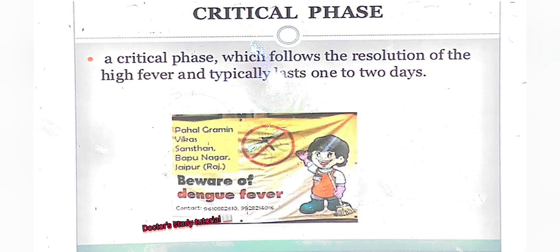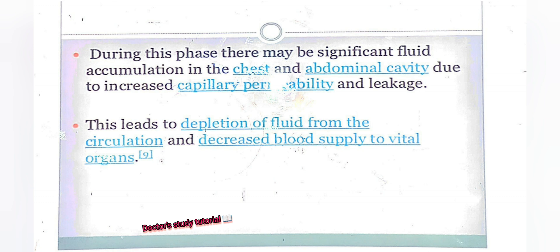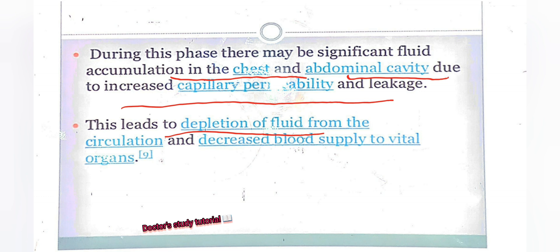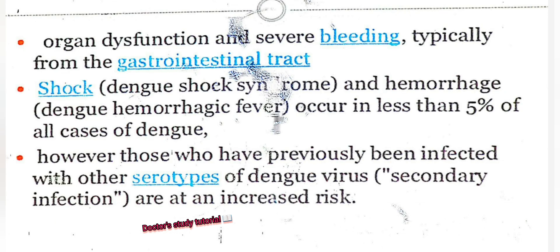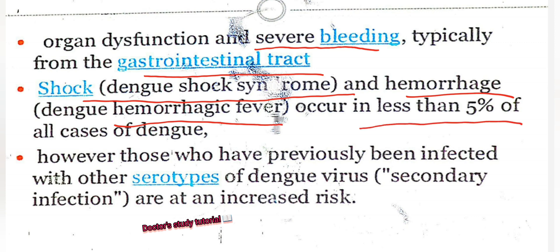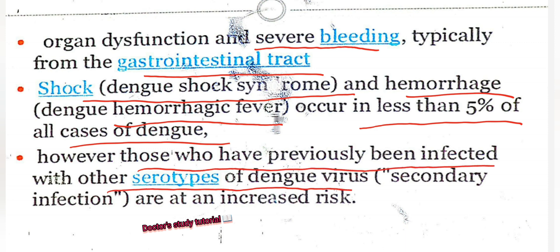The critical phase follows the resolution of high fever and typically lasts one or two days. During this phase, there may be significant fluid accumulation in the chest and abdominal cavity due to increased capillary permeability and leakage, leading to depletion of fluid from the circulation and decreased blood supply to vital organs. Organ dysfunction and severe bleeding — typically from the gastrointestinal tract — shock, dengue shock syndrome, and dengue hemorrhagic fever occur in less than 5% of all dengue cases. However, those previously infected with a different serotype face increased risk from secondary infection.